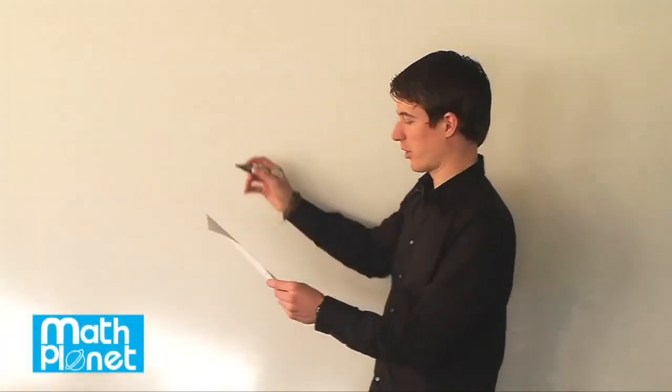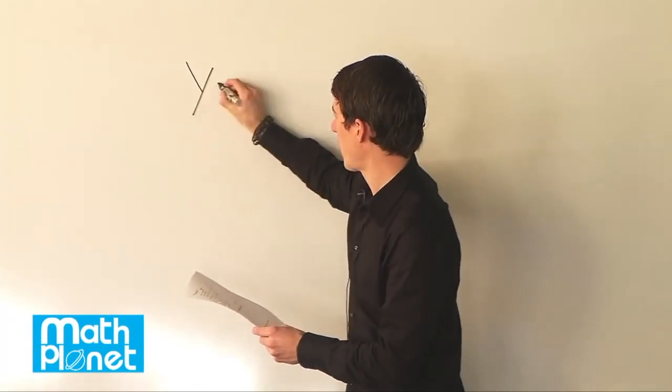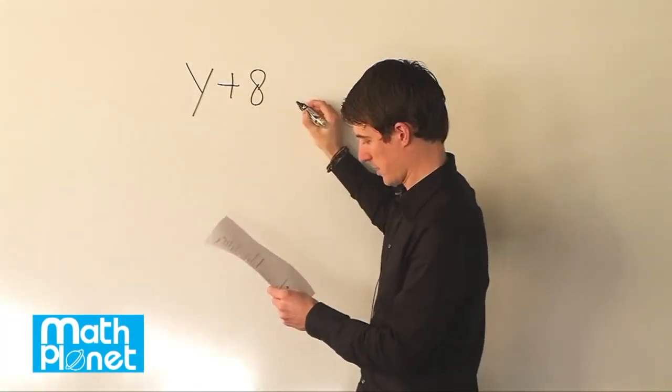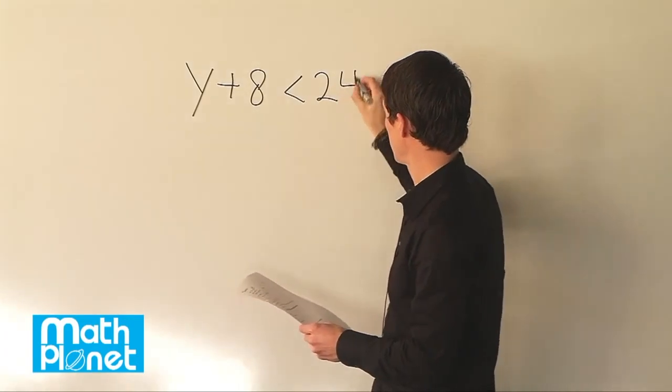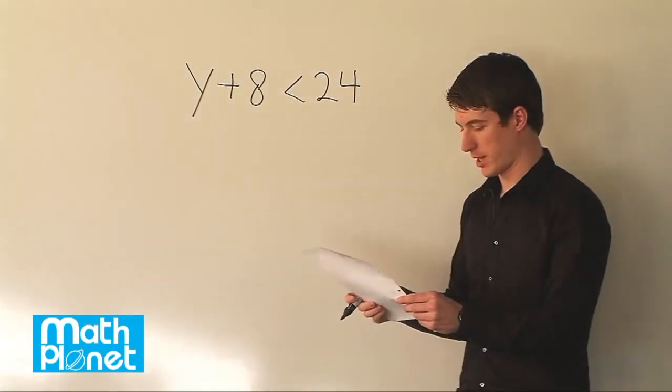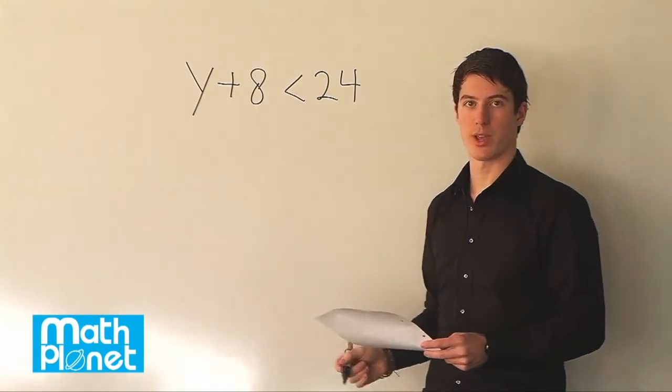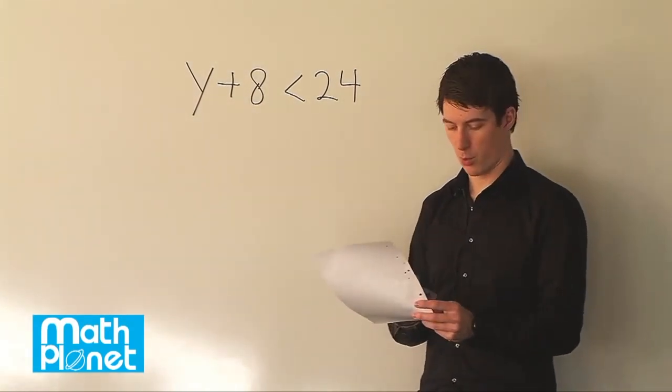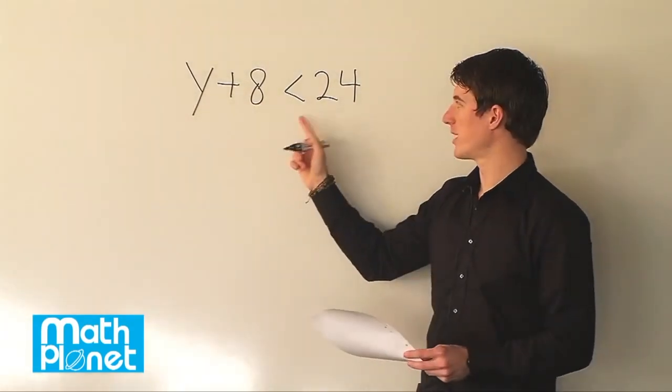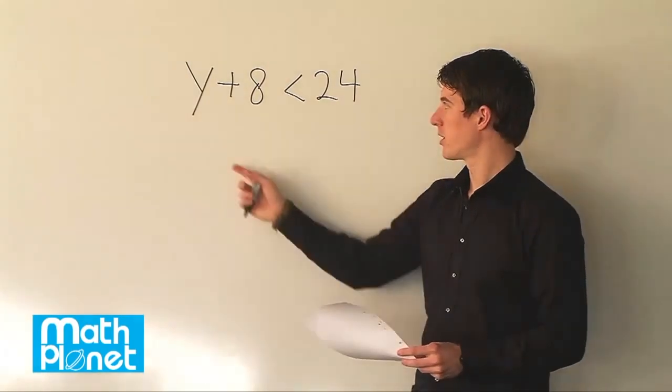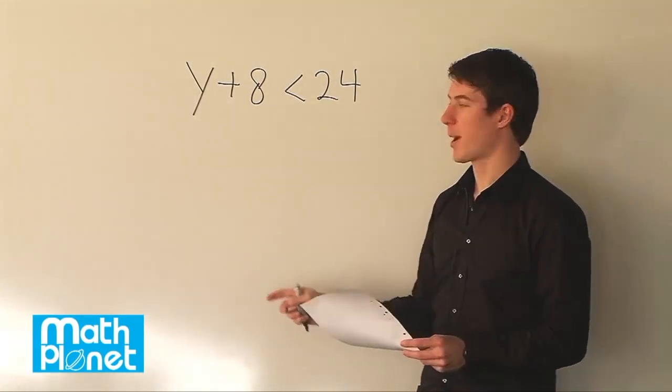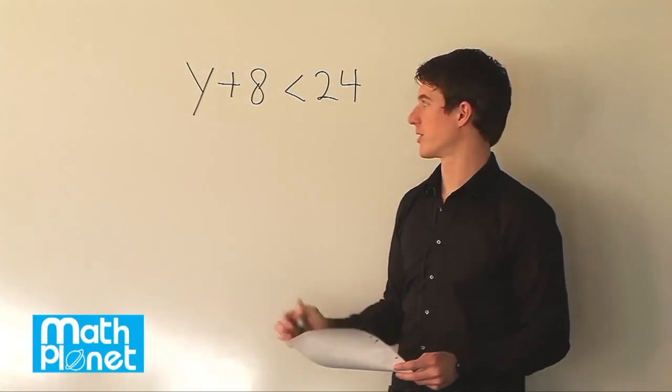We have the following inequality. y plus 8 is less than 24. The question for this is simply, is this true if y is a certain value? We're given y is equal to 7. And we want to know if this inequality is still true. So we have y plus 8 is less than 24. What happens if we plug in y is equal to 7?